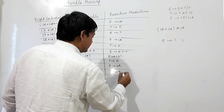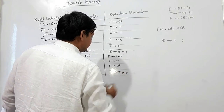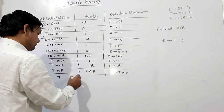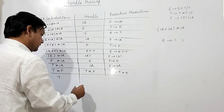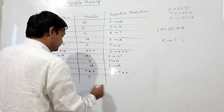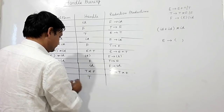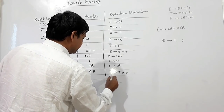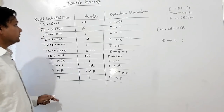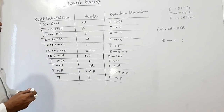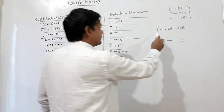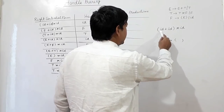Now T is here, T can be taken as handle, and it can be reduced by E. So this is the handle pruning for the string: open bracket id plus id close bracket star id.